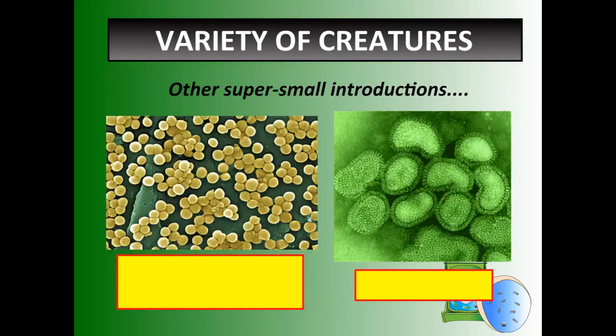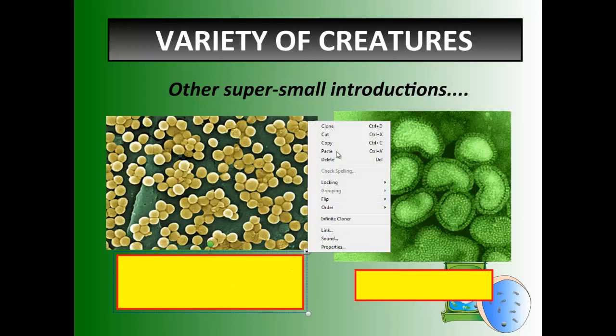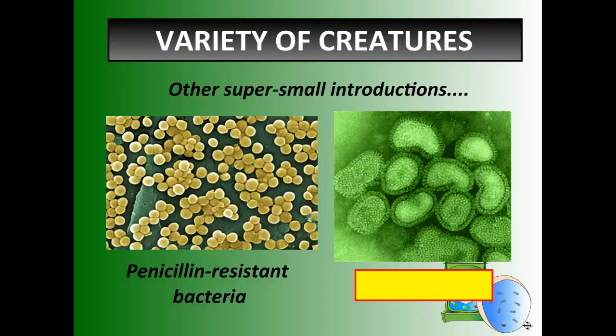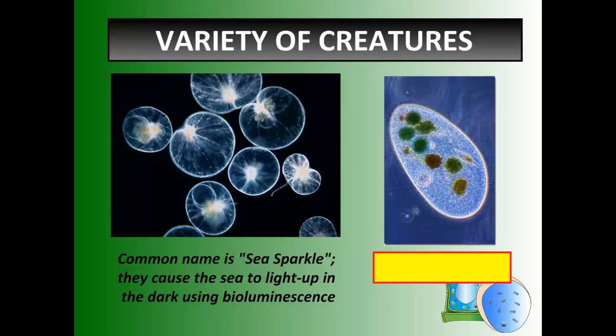Some other super-small examples: here we have penicillin-resistant bacteria — a little bacteria that actually won't react when you take penicillin. This creates a penicillin allergy sometimes and makes it very difficult to treat. This is the flu, the influenza virus — that's what it looks like under a microscope. These are called sea sparkles because they light up and sparkle; they use bioluminescence and they're found in deep parts of the ocean — a single-celled organism.